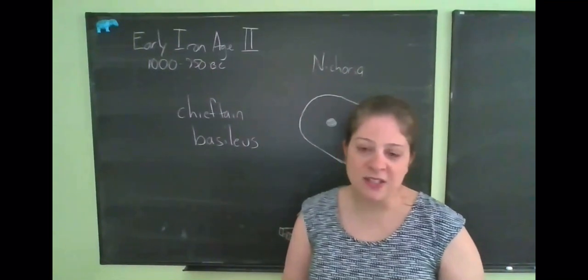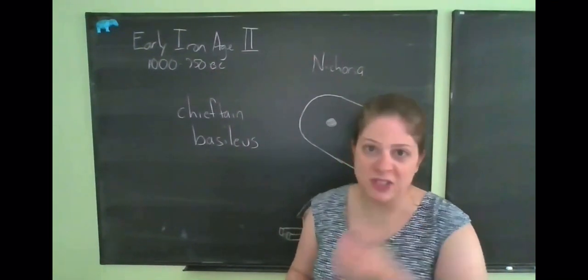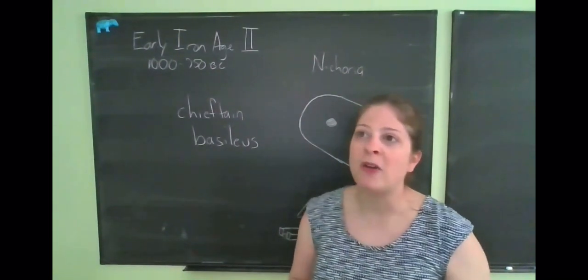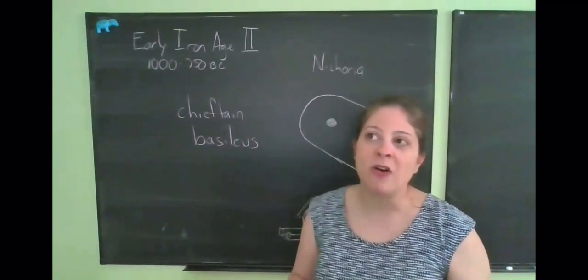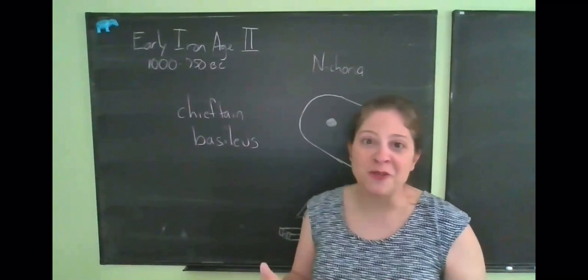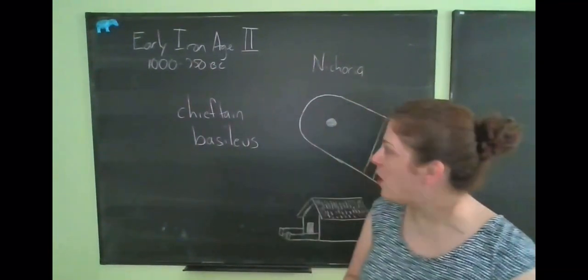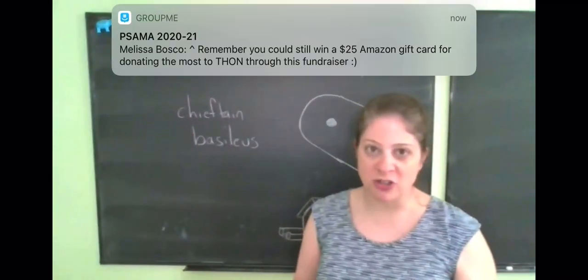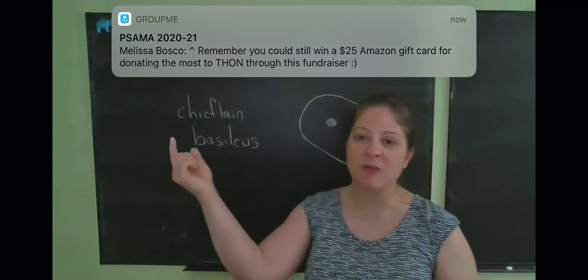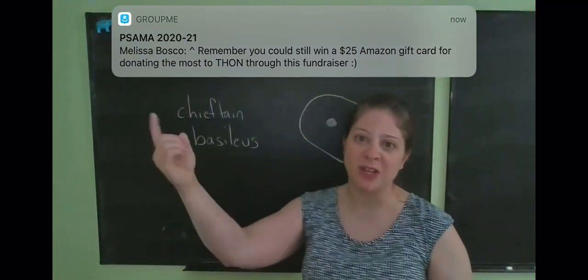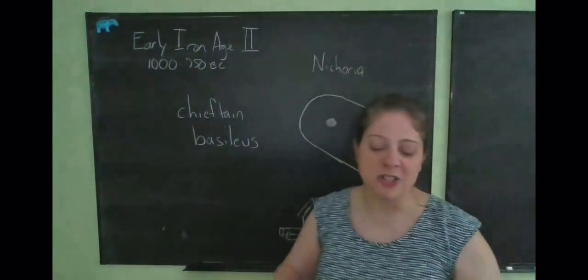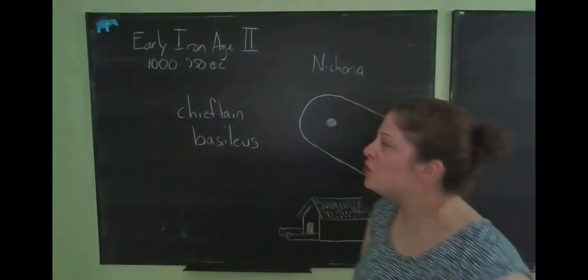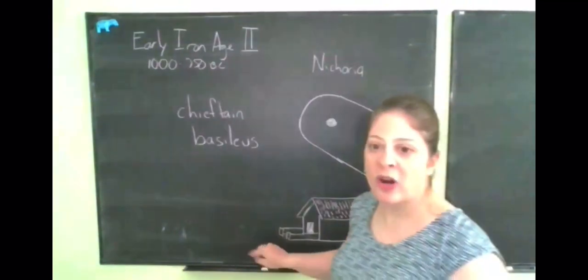So we have the existence at certain sites, certain Early Iron Age II sites in the Greek mainland. We see the existence of what we might call chieftain houses. They are fairly large apsidal structures. And so apsidal means that one end instead of being straight is rounded. What's called an apse if you've ever seen like basilica architecture, church architecture. So two examples of these would be at Nicoria and Lefcondi.